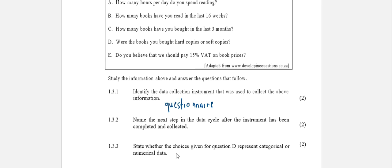Question 1.3.2: Name the step in the data cycle after the instrument has been completed and collected. The four steps in the data cycle, and you must know this: first you collect the data or information, secondly you organize that data, then you summarize the data, and finally you present the data using graphs and so forth. After the questions have been collected, the next step would be number two: organize the data.